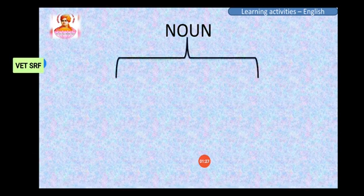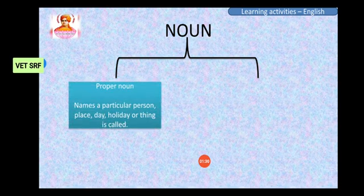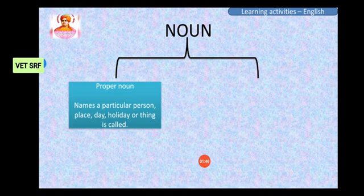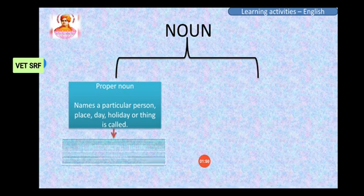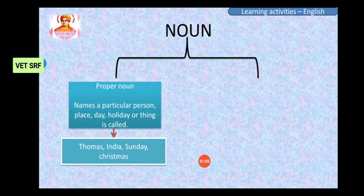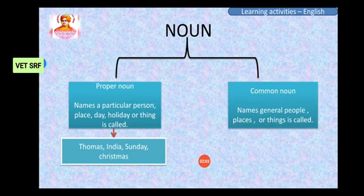Noun can be divided into two. One is proper noun. Proper noun is nothing but a particular person, particular place, particular day, or anything we are describing with its particular name. For example, Thomas is a person — we are describing with his name.